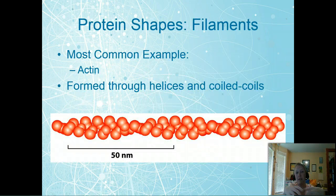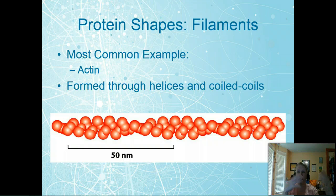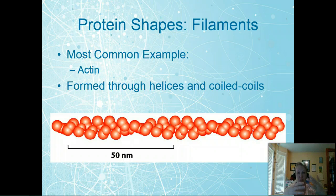A filament. You probably have heard of filaments such as actin. These are formed through alpha helices and coiled coils. It's when we see that alpha helix wrapping upon itself to create that really strong cytoskeleton structure that we know and we need for our cells.